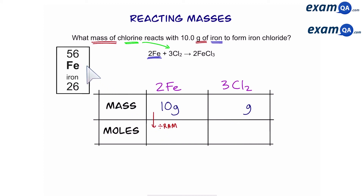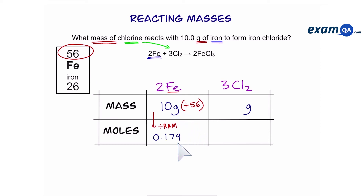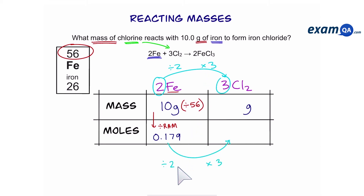We can work it out by turning mass into moles first. Using the periodic table, the relative atomic mass of iron — the big number — is 56. Since we have one iron, the relative atomic mass is 56. 10 divided by 56 gives us 0.179 moles (to three decimal places). Now we convert iron's moles to chlorine. Looking at the big numbers, the ratio is 2 to 3, meaning we divide by 2 first and then multiply by 3. That gives us 0.269 moles of chlorine.